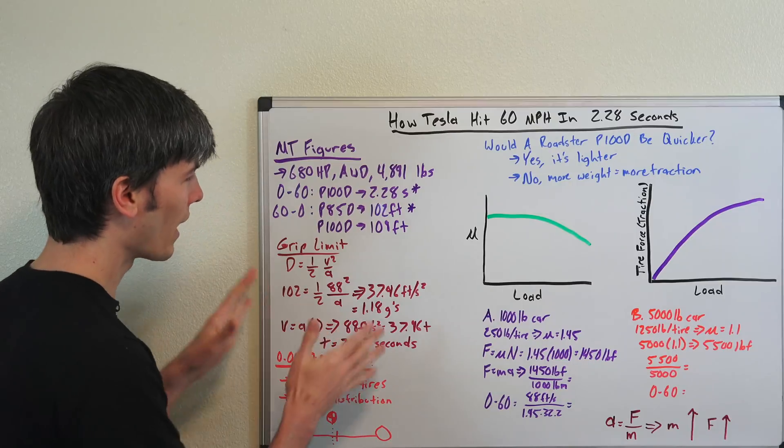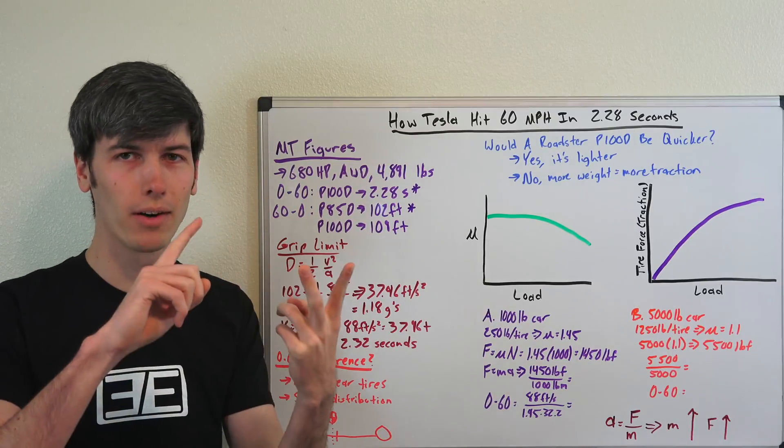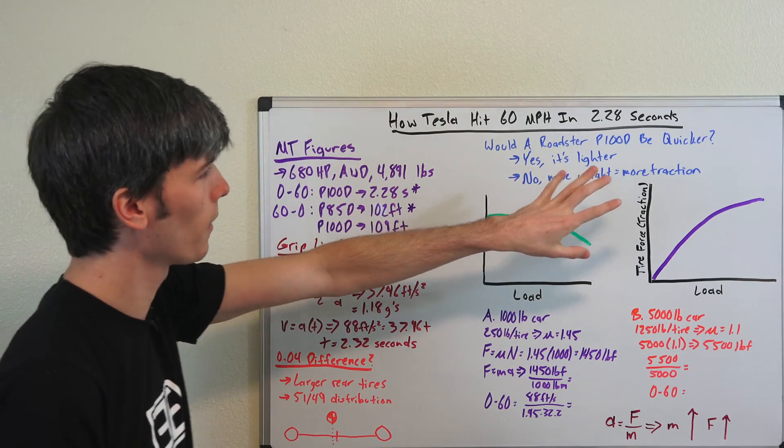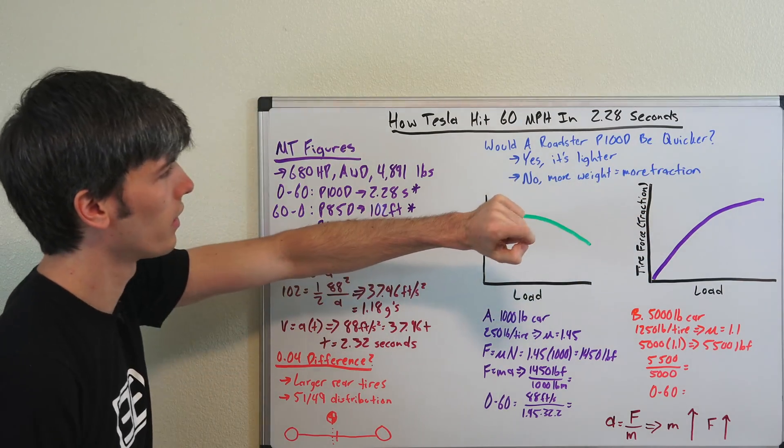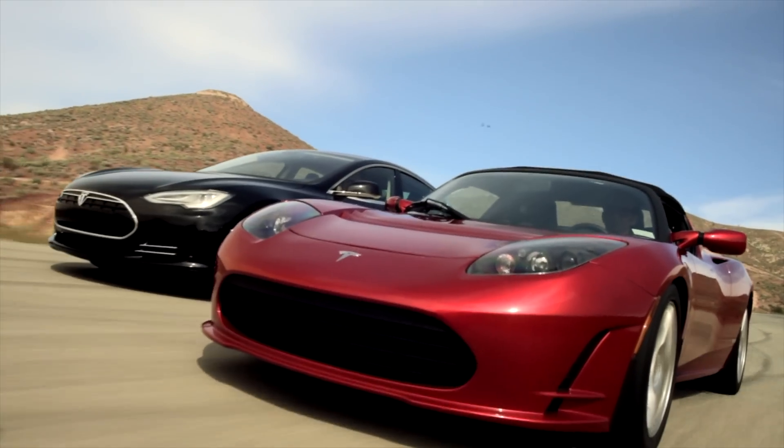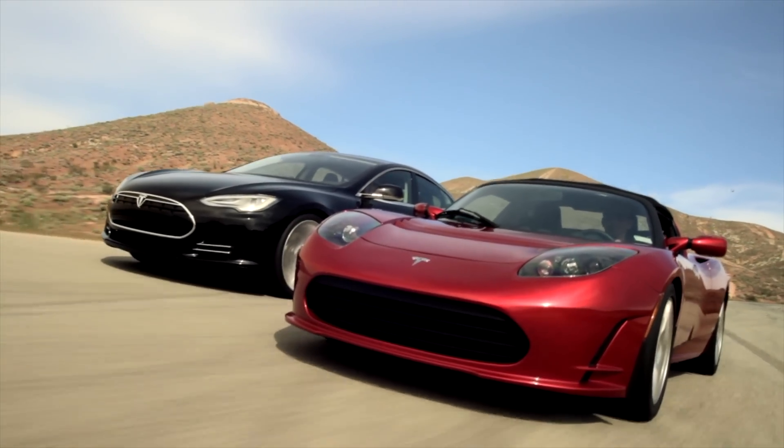Okay, so that's how Tesla did it really. It's just power, grip, and all-wheel drive. But all the confusion came from this question right here in this Reddit thread where they said, you know, what if they put this package in a Tesla Roadster? How quick would that thing be? Would it actually be faster?